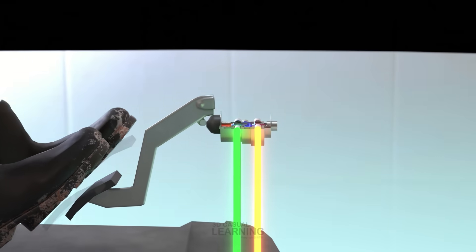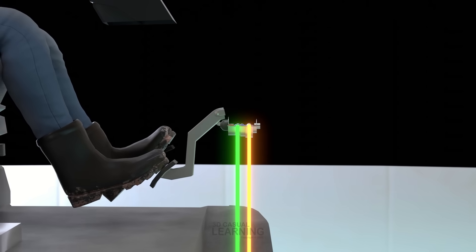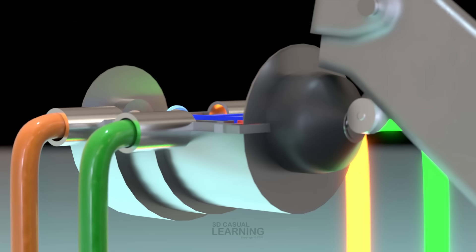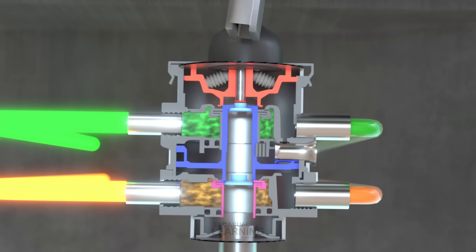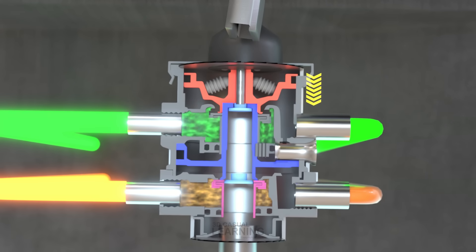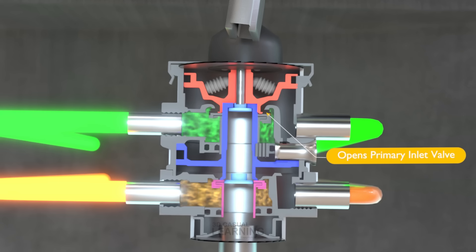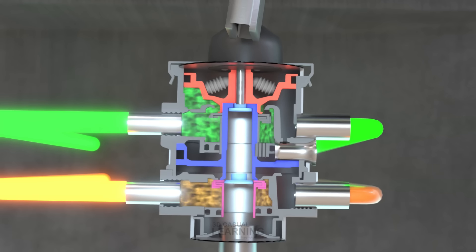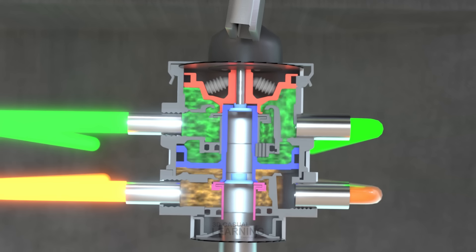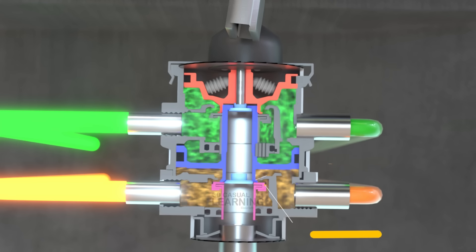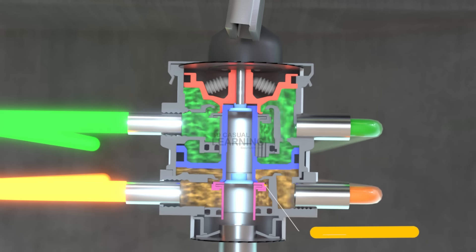When the brake is applied, pressing the treadle pushes the plunger down onto the spring seat. This compresses the graduating spring, causing the primary piston to move. As it travels, the piston first closes the primary exhaust valve, then unseats the primary inlet valve, allowing pressurized air from the primary service reservoir to flow into the primary delivery port. Some of this air also flows through an internal bleed passage into the secondary piston cavity, where the pressure buildup pushes the relay piston forward. As the relay piston moves, it closes the secondary exhaust valve and opens the secondary inlet valve, allowing air from the secondary reservoir to flow into its delivery port.